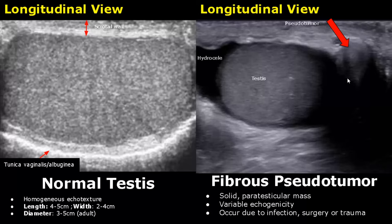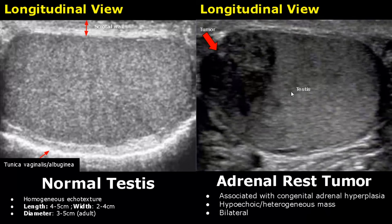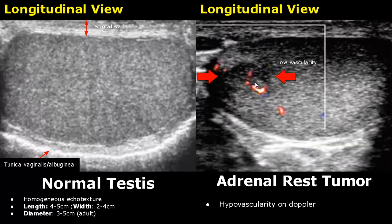Adrenal rest tumor is associated with congenital adrenal hyperplasia. It is bilateral and usually appears hypoechoic or heterogeneous. Here is a Doppler image of adrenal rest tumor — it shows low internal vascularity on color Doppler.